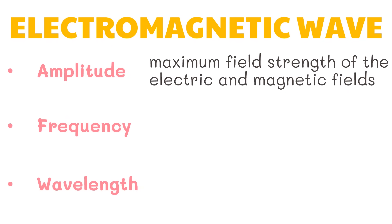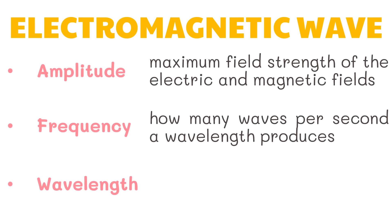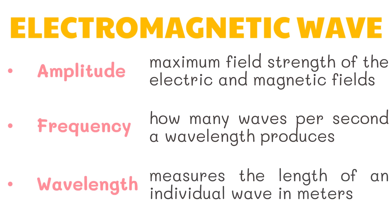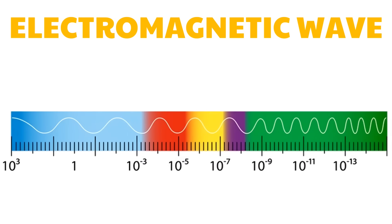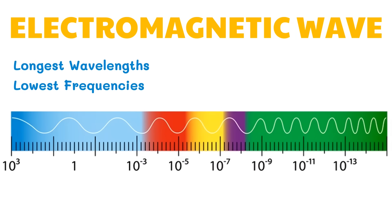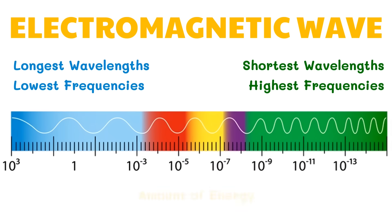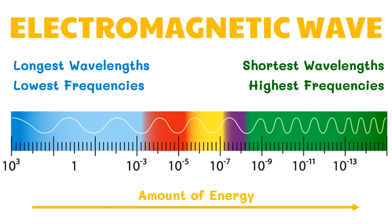Amplitude is the maximum field strength of the electric and magnetic fields. An electromagnetic wave is arranged according to its frequency and wavelength. Frequency describes how many waves per second a wavelength produces, while wavelength measures the length of an individual wave in meters. The electromagnetic waves are often arranged in the order of wavelength and frequency in what is known as the electromagnetic spectrum. Because all electromagnetic waves travel at the same speed, if the frequency of a wave changes, then the wavelength must change as well. Waves with the longest wavelengths have the lowest frequencies, while waves with the shortest wavelengths have the highest frequencies.